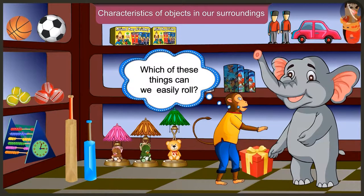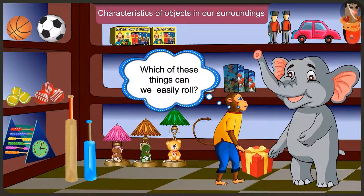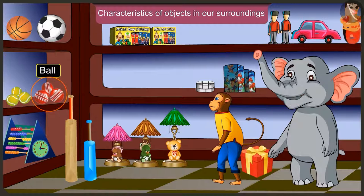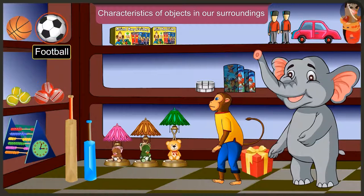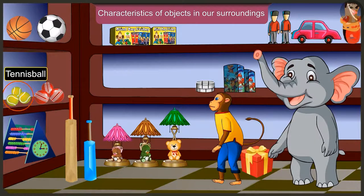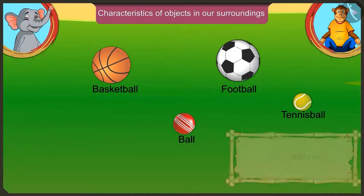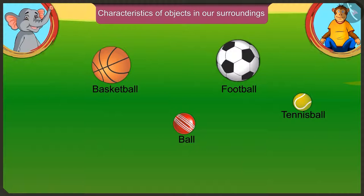Which are the things here which can be easily rolled? We can easily roll basketball, ball, football and tennis ball because they don't have any corners and they have a curved surface.